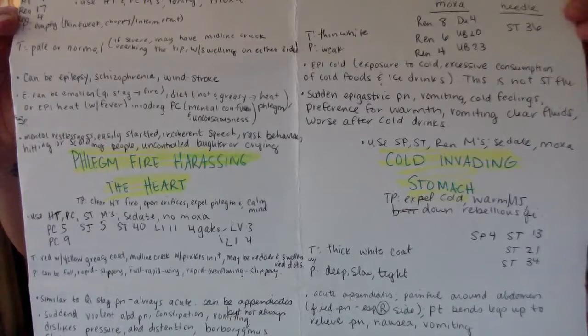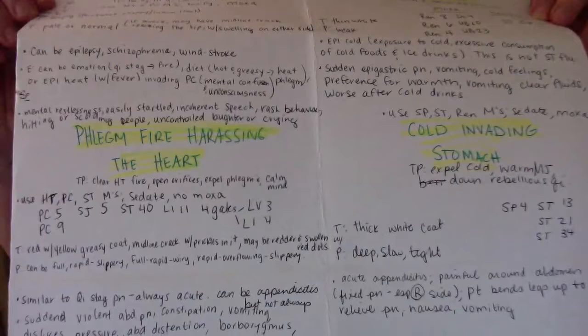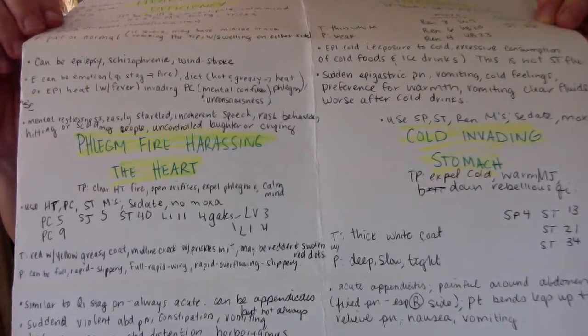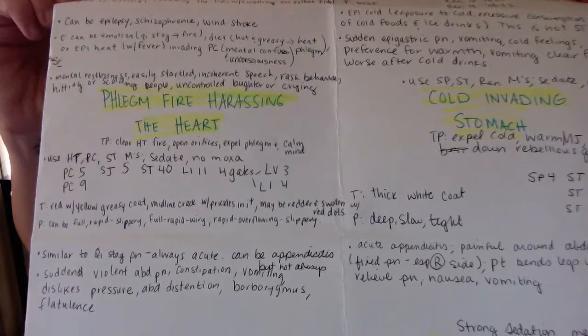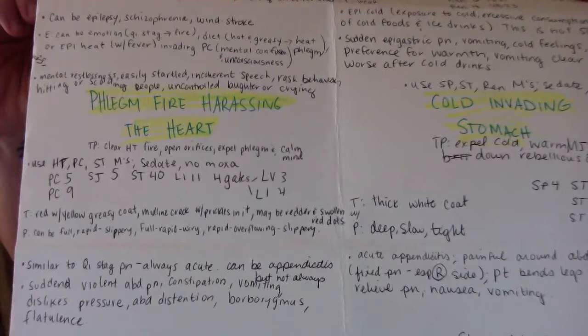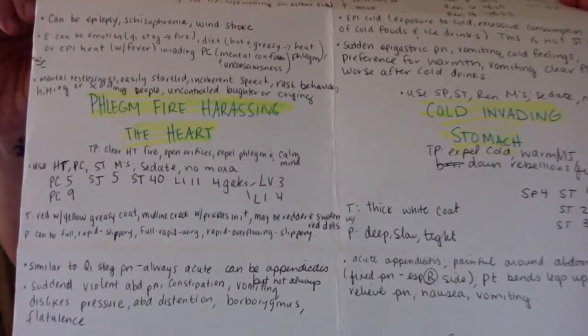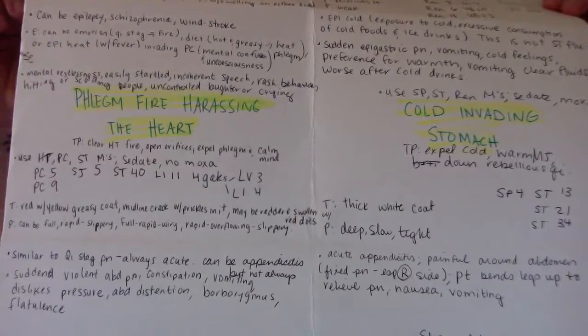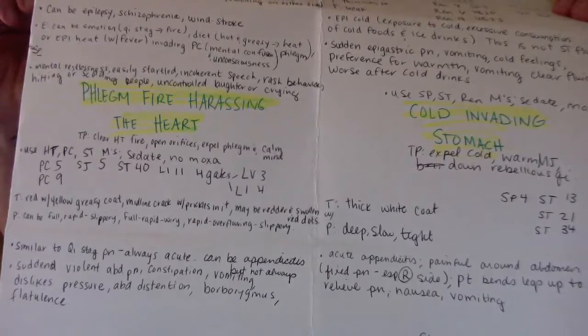Treatment principle: clear heat and clear heart fire, open orifices, expel phlegm and calm mind. The tongue is red with a yellow greasy coat. There's a midline crack with prickles in it, may be redder and swollen red dots. The pulse can be full rapid, full rapid slippery, full rapid wiry, rapid overflowing slippery.